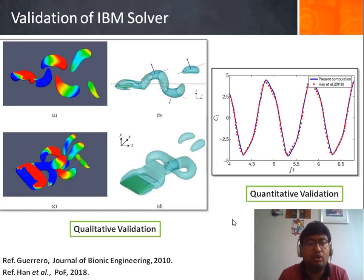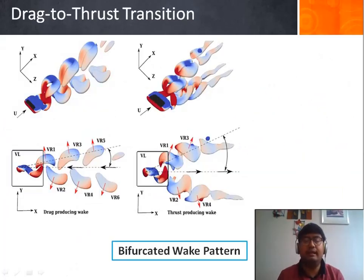The present IBM solver has been validated qualitatively as well as quantitatively with the reference results. We can see that the vortex contours represented through the Q criterion match quite well with the reference results of Guo and Ryo. In a quantitative manner, the lift coefficient time histories also show a very close match with the reference results of Han et al.